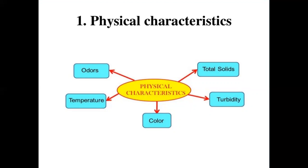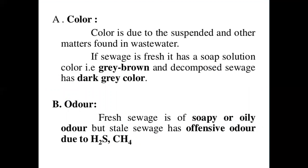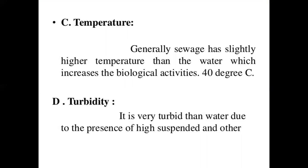Physical characteristics of sewage are basically five types: odor, temperature, color, total solids, and turbidity. Color is due to suspended and other matter found in wastewater. Fresh sewage has a soap-solution color — gray-brown — while decomposed sewage has a dark gray color. Fresh sewage has a soapy or oily odor, but stale sewage has an offensive odor due to H2S and CH4.